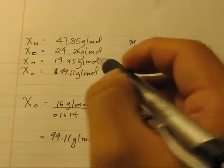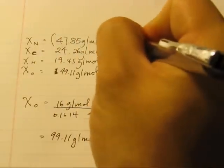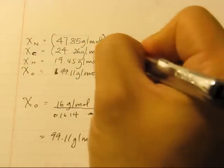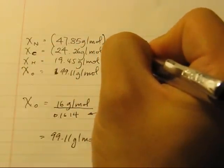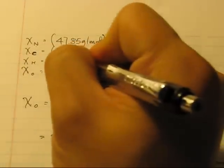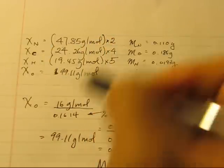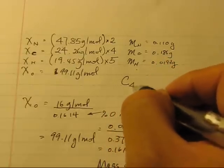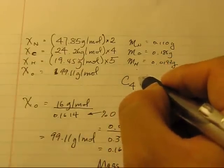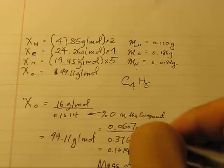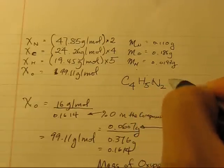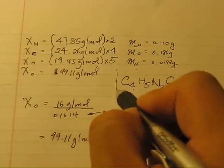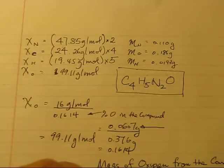So, if you put in a calculator, you will find out that this number has to multiply by 2 to get to the same number right here. And this number would have to multiply by 4. And this one would have to multiply by 5. What that means is that we have 4 carbon, 5 hydrogen, 2 nitrogen, and 1 oxygen. And this will be the empirical formula for caffeine.